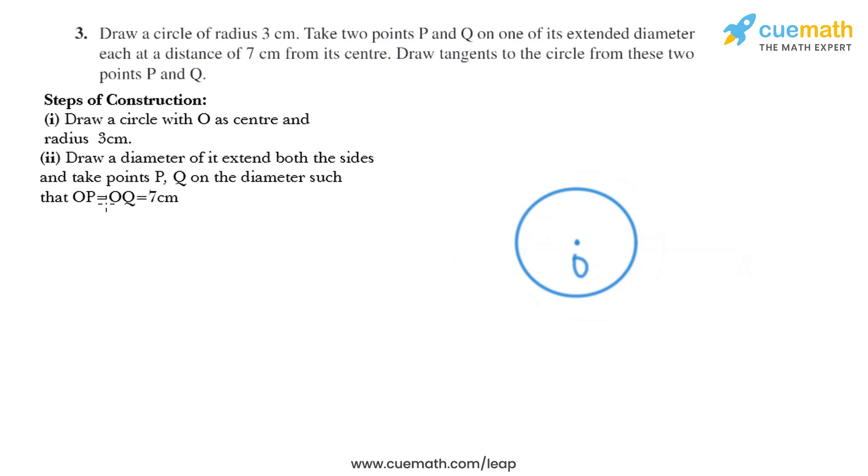Now in the next step, draw a diameter and extend both sides. Take points P and Q on the diameter such that OP equals OQ equals 7 centimeters. So we'll draw OP and OQ like this, and they both are 7 centimeters.